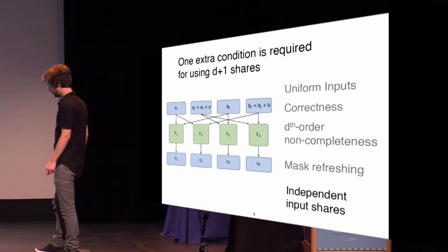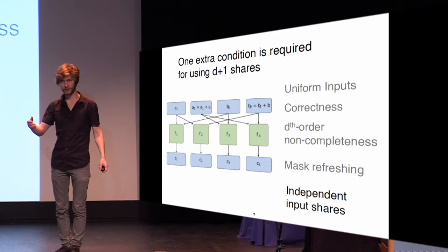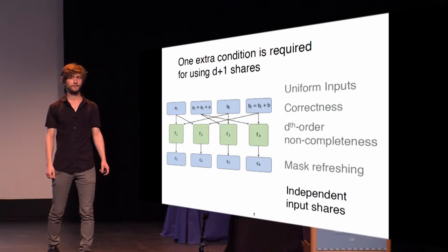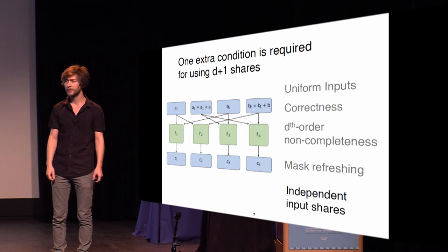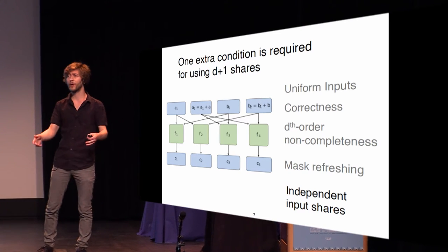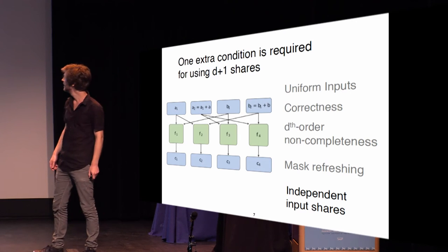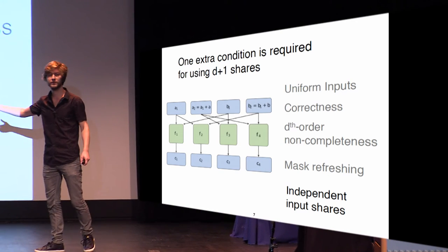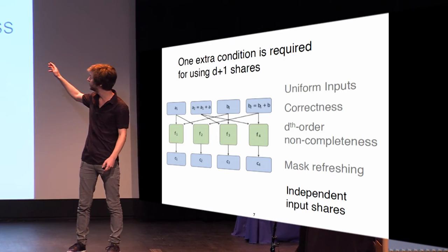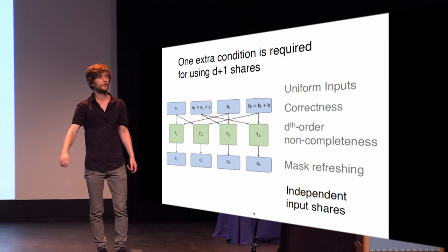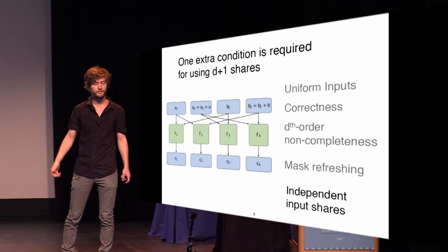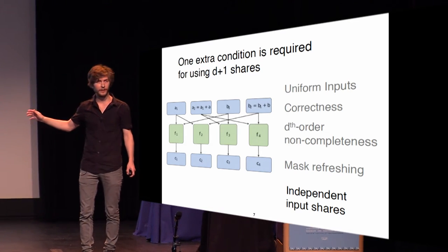One extra condition we need to inherit from the consolidated masking schemes paper is that the input shares need to be independent. The best way to explain this is by looking at what would go wrong if they are dependent. If we take A1 equal to B1 and A2 equal to B2, then observing one sub-function gives us both A1 and B2, which with B2 equaling A2 gives enough information to unmask our secret value A — so our security would be broken.